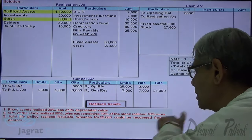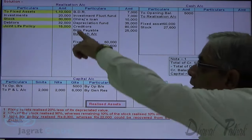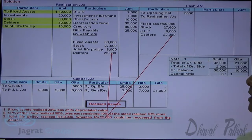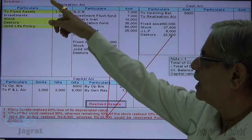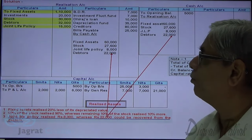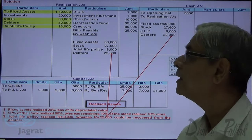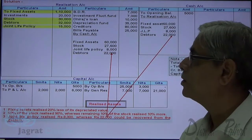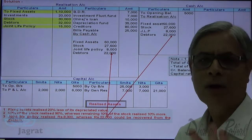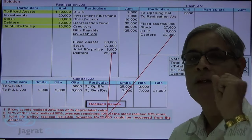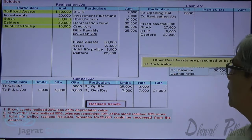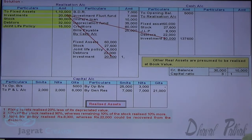Joint life policy realized 8,000, where 22,000 was recovered from debtors — cash to realization, 22,000. Regarding investment: investment is at 20,000 and fluctuation fund is 7,000. Since you are not told anything about the amount realized for investment, we presume book value is realized. So 20,000 is taken as the value realized for investment — cash account debit 20,000 to realization account credit 20,000.